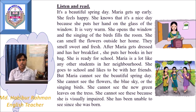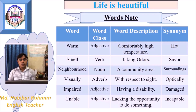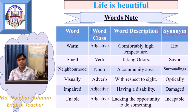Now read the text yourself again. I hope you have read the text. Let's identify some words from the passage: warm, smell, neighborhood, visually impaired, and unable. We can see a table where the words identified from the passage are kept in the first column. In the second column, the class of the words are kept according to the parts of speech. The words' meaning or descriptions are kept in the third column, and in the fourth column, a synonym for each word is kept.